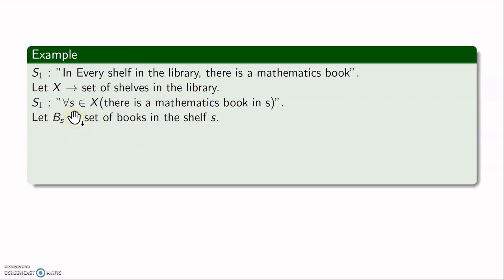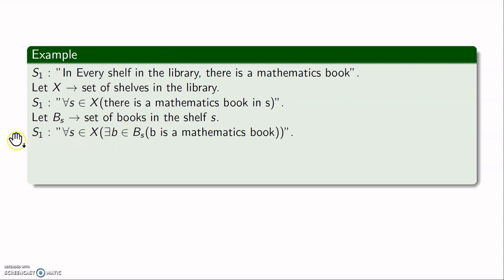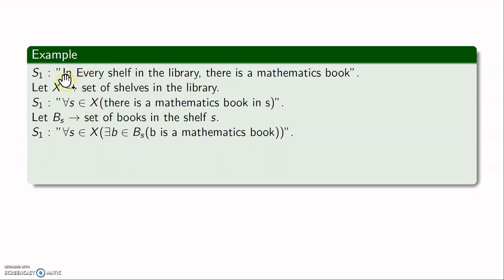Using quantifiers, S1 can be written as: For every S in X, there exists b in B_S such that b is a mathematics book. That is, for all S in X, there exists b in B_S such that b is a mathematics book. This captures the original statement that every shelf in the library contains a mathematics book.